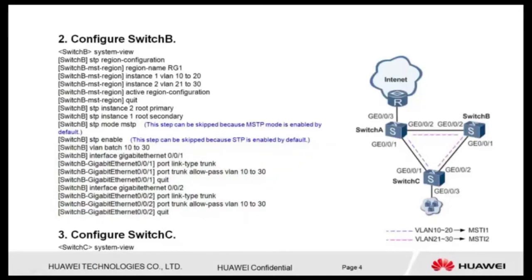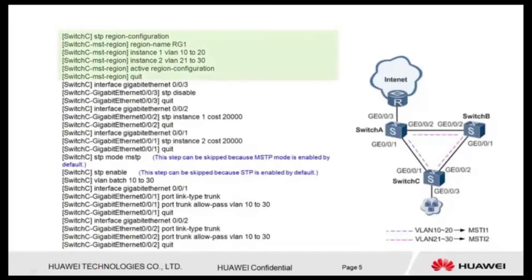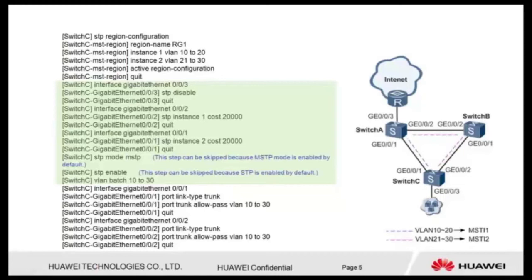Step 3: Configure switch C. Configure the MST region name of switch C, map VLANs to MSTi1 and MSTi2, and activate the MST region configuration. Disable MSTP on ports that do not participate in MSTP calculation. Set the path cost of GE002 in MSTi1 to 2000 so that the port can be blocked in MSTi1. Set the path cost of GE001 in MSTi2 to 2000 so that the port can be blocked in MSTi2. Configure switch C to work in MSTP mode and enable MSTP. Configure layer 2 forwarding on switch C.